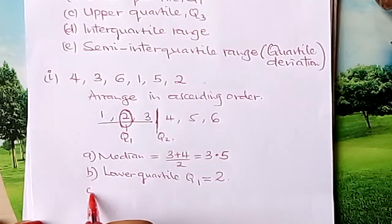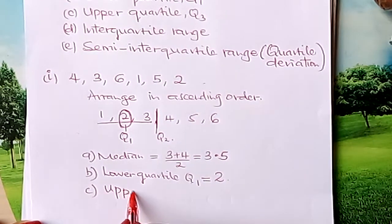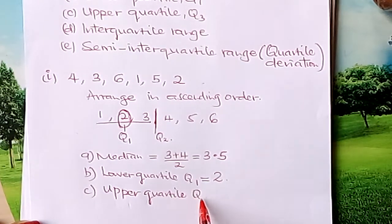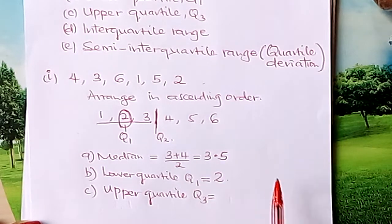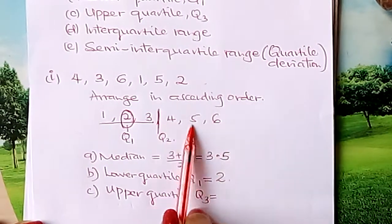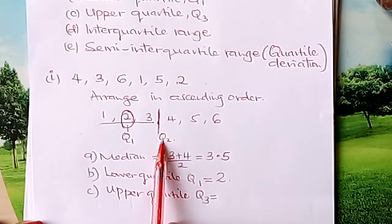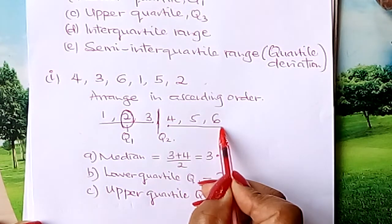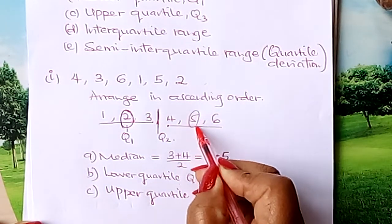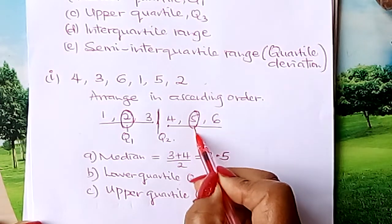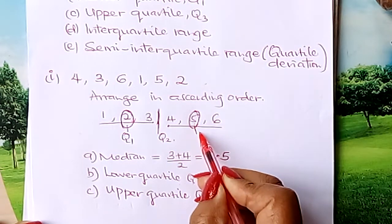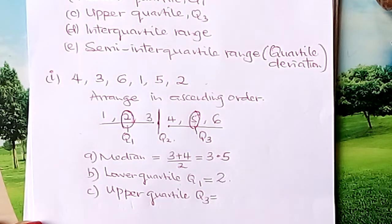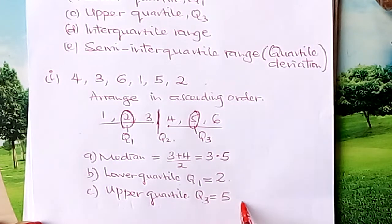We now go to part C: the upper quartile, which is abbreviated as Q3. For the upper quartile, you go to the upper part of the data in reference to the median. The upper part is from 4 upwards. You pick the median of the upper part — this is the one called the upper quartile Q3. So our Q3 is 5.